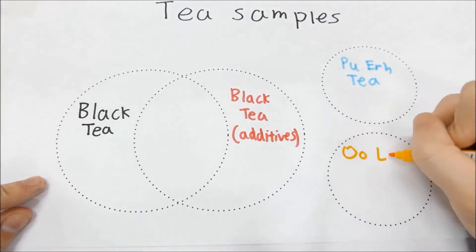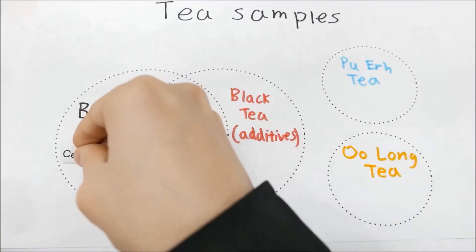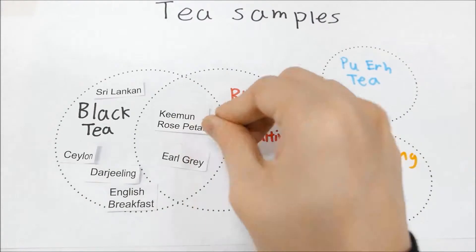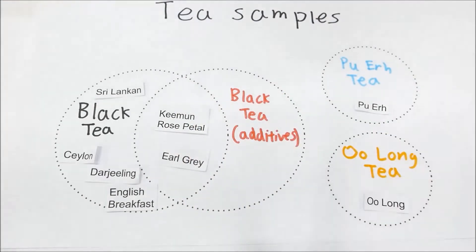A total of eight tea leaf samples have been used with four being categorized under black tea, two under black tea with additives, and one each under pua tea and oolong tea.